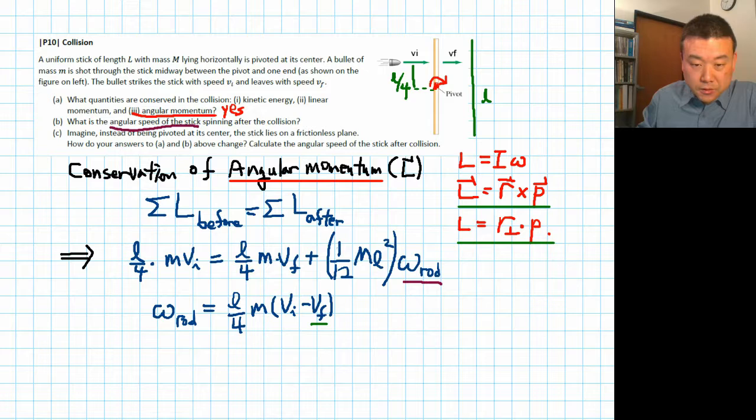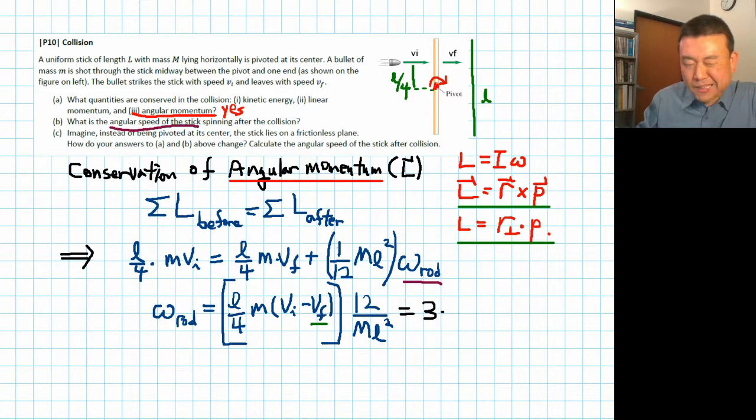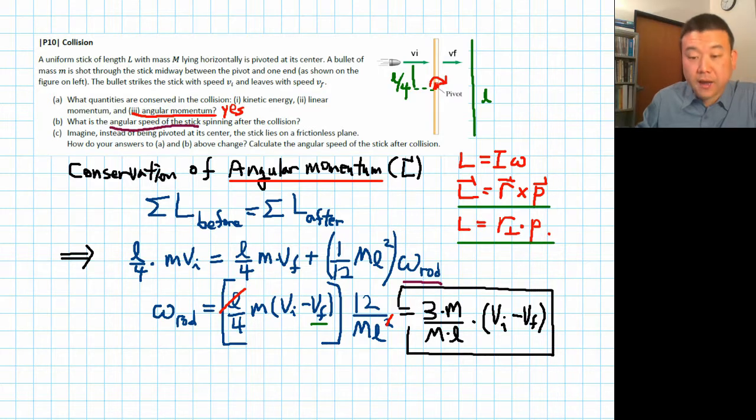Anyways, keep going. So I'm solving for omega rod. So take all this quantity and multiply by the reciprocal of this coefficient. So it'll be 12 over capital M L squared. All right, I can simplify this a little bit. So let me do that. 12 over 4 is 3. So 3 times, let me fix the capital L versus lowercase L. So I see one factor of L cancelling out one factor of L here. So L will be the numerator. So I have 3 times lowercase m divided by uppercase M times L times initial speed minus final speed.